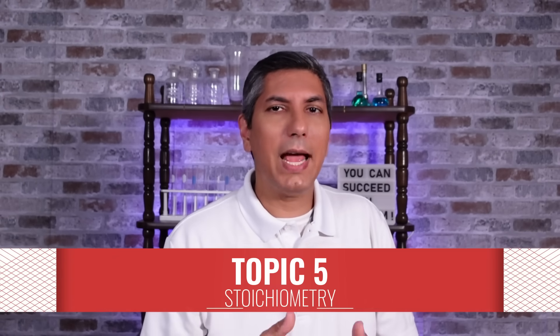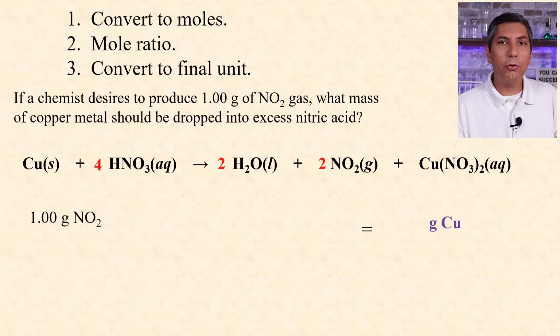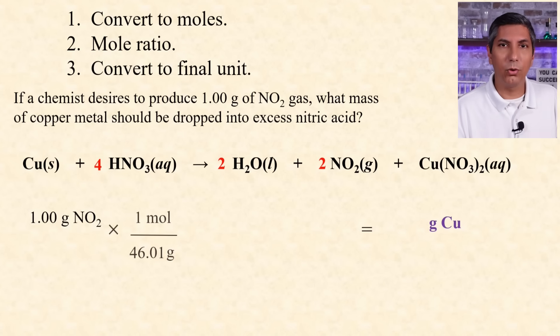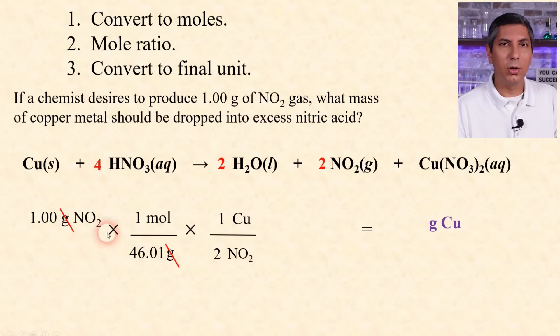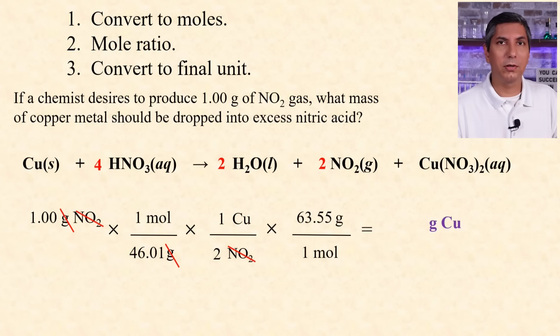We use balanced chemical equations as a recipe to calculate how much product can be made from a certain amount of reactant. In this problem, we're trying to produce one gram of nitrogen monoxide. We write that down and go through a three-step process to convert to grams of copper. Step one is to convert to moles. Step two is to use a mole ratio — the numbers for that mole ratio come from the coefficients of the balanced equation for the substances we're working with. Step three is to convert to our final unit, which is grams in this case.